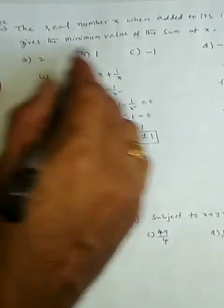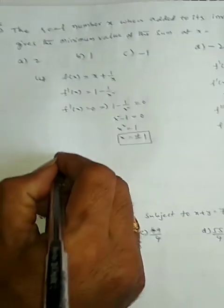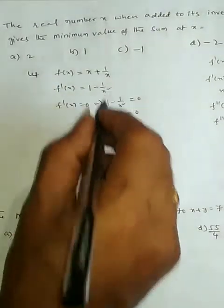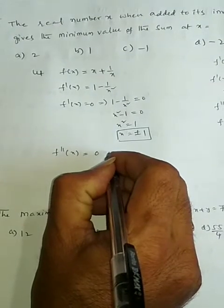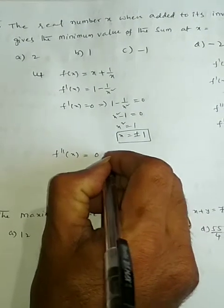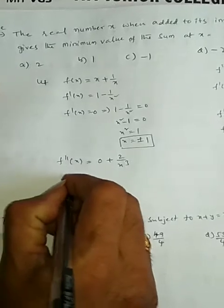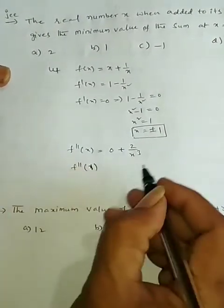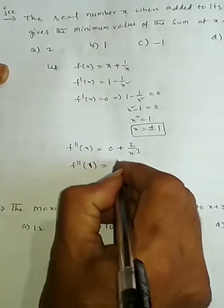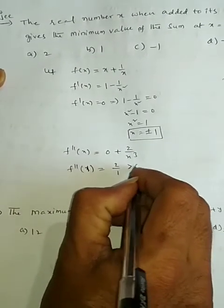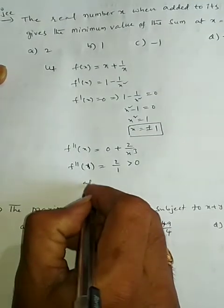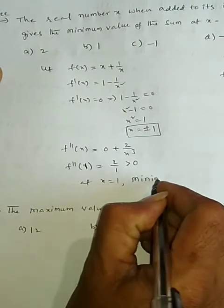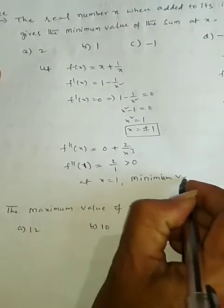But here we are given it is a minimum value. So to find f''(x): f''(x) is equal to derivative of 1 by x², which is minus 2 by x³, so plus 2 by x³. Now f''(1) — taking x equal to 1 — gives 2 by 1, which is greater than 0. Therefore, x equal to 1 is a minimum value.